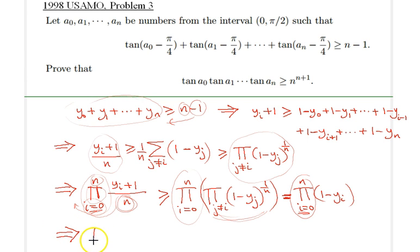Therefore, that would imply the product from i equals 0 to n of, I can rewrite it like this nicely: 1 plus y sub i over 1 minus y sub i, greater than or equal to n raised to the n plus 1st power.